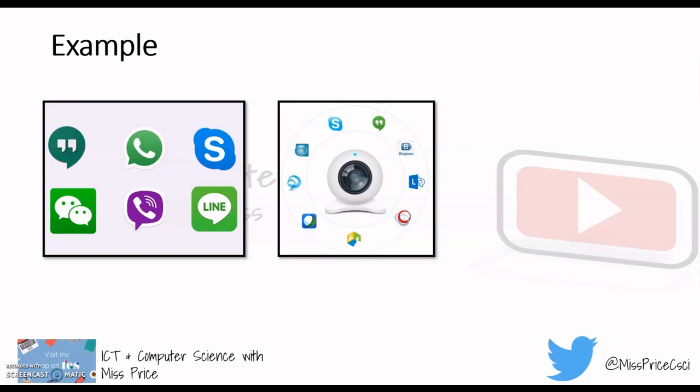Video conferencing is another example. When you speak to someone on FaceTime or Skype and you can see their picture, that is video conferencing — and that's where we need a regular, continuous stream of data so you can see that person and talk to that person.